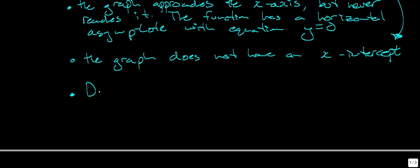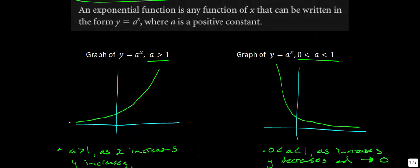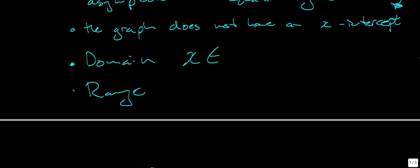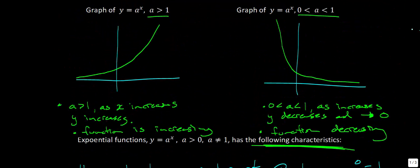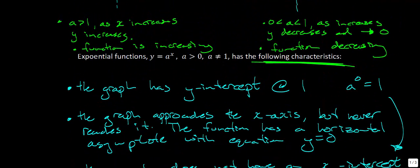What do we know about the domain and range? Looking at these functions, they go infinitely to the left and right, so the domain is: x is a member of the reals. For the range, we can't have any negative values and y can never equal 0, so the range is y greater than 0. Those are the basic characteristics every exponential function will have, assuming a is greater than 0.